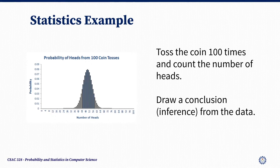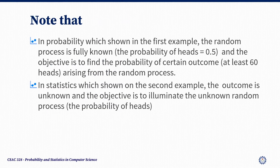In statistics, say for instance you have a coin of unknown provenance. To investigate whether it is fair, you toss it 100 times and count the number of heads. Let's say you count 60 heads. Your job as a statistician is to draw a conclusion or inference from this data. There are many ways to proceed, both in terms of the form the conclusion takes and the probability computations used to justify it. In fact, different statisticians might draw different conclusions.